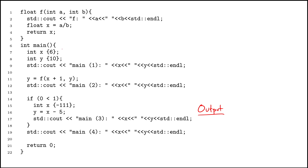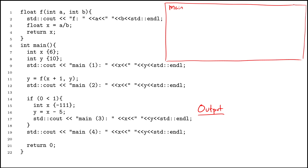I'm going to start on line number seven, inside the scope of main. So I'm going to draw a scoping box for main. If you want more information on this format — scoping boxes — you might want to take a look at some of the old 111 videos. On line six, I create a scoping box for main because I've entered the scope of main. On line seven, I create a variable called x. x is an int, and x's initial value is 6.